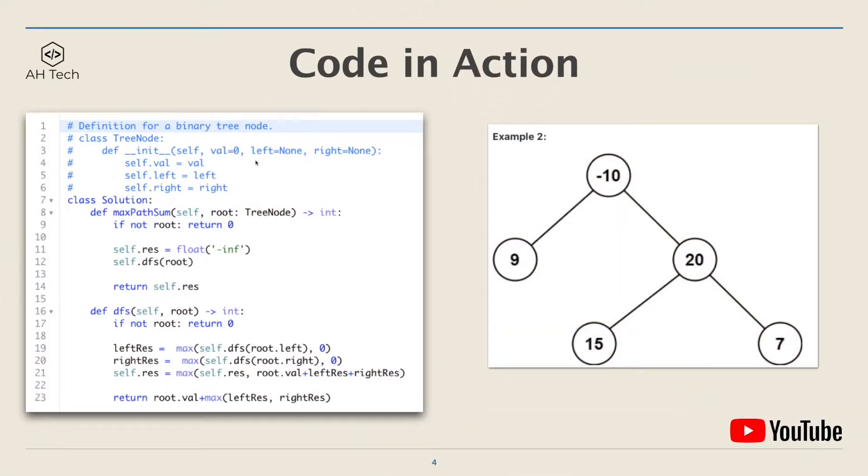Okay, in the code first handle the edge case: if the root is null then we will just return zero. And then define a class variable result and then initialize it to a very small value. And here we will write a separate DFS function which will return an integer. And the base condition of this DFS function is if the root is null then we will return zero.